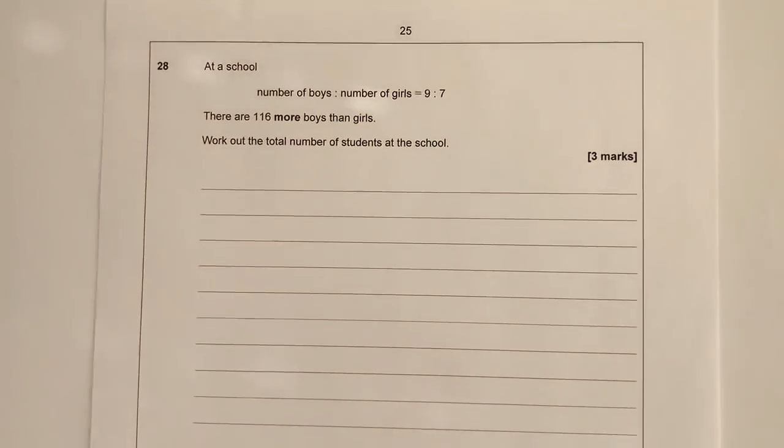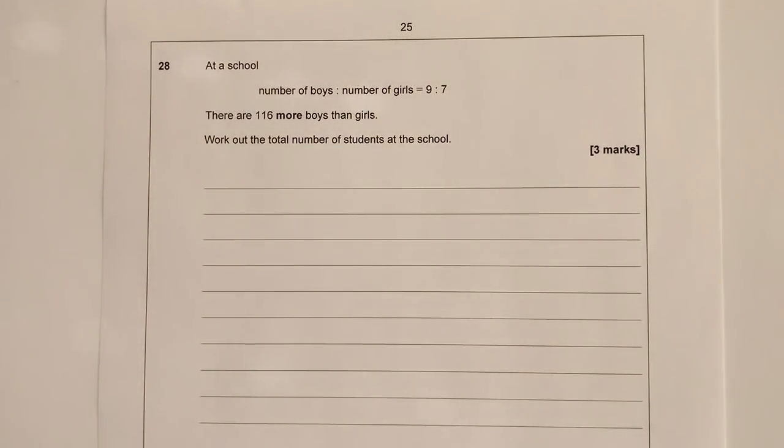So let's move on then to question number 28. And it says, we've got in a school, we've got a number of boys, the number of girls is 9 to 7. Ratio questions, I think again at the beginning of this particular playlist, we've done another question on ratio right at the very beginning of the paper.